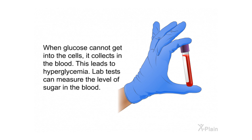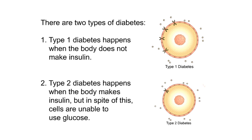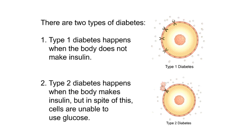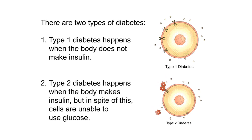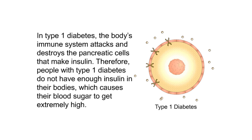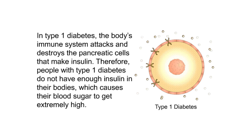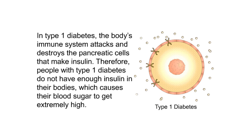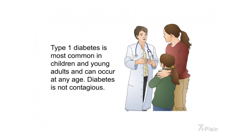There are two types of diabetes. Type 1 diabetes happens when the body does not make insulin. In type 1 diabetes, the body's immune system attacks and destroys the pancreatic cells that make insulin. Therefore, people with type 1 diabetes do not have enough insulin, which causes their blood sugar to get extremely high. Type 1 diabetes is most common in children and young adults but can occur at any age. Diabetes is not contagious.